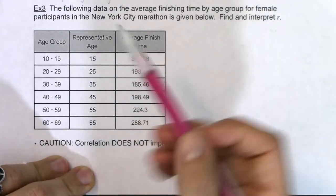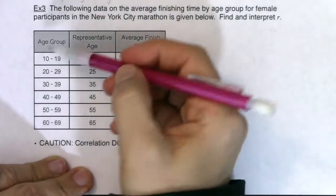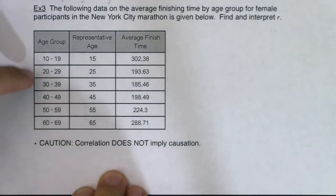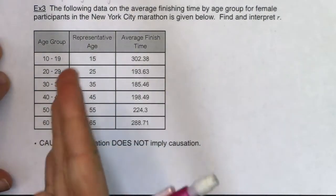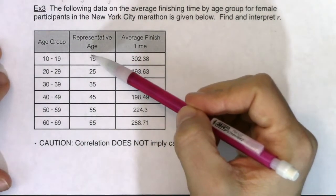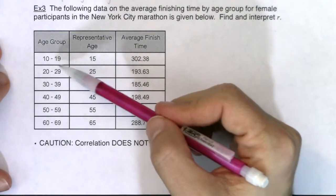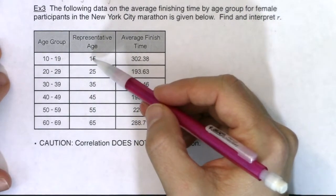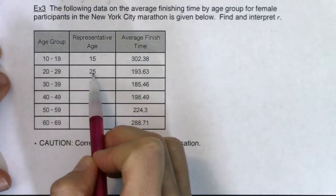Age is placed into groups here, and when you want to enter grouped data into a list, our lists aren't capable of entering categories. We can't type '10 to 19' or '20 to 29' into L1 — we can only put one number in. So what we do with age groups is take the halfway point. For example, 15 represents the 10–19 group (technically 14.5, but 15 is fine).